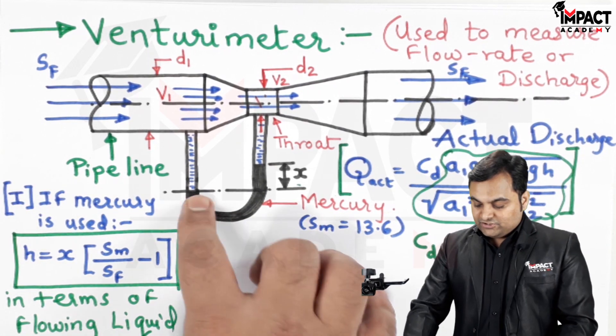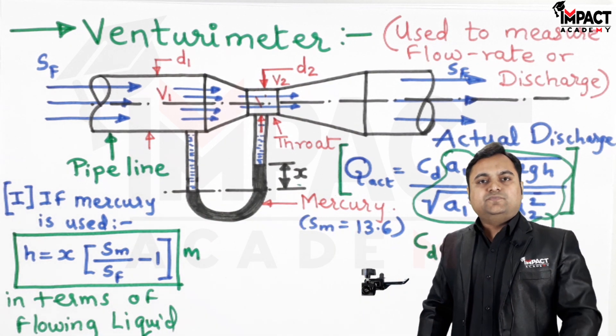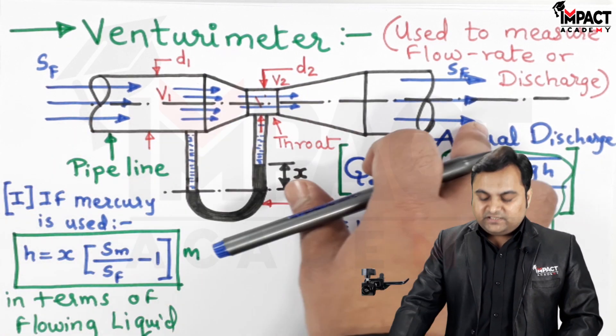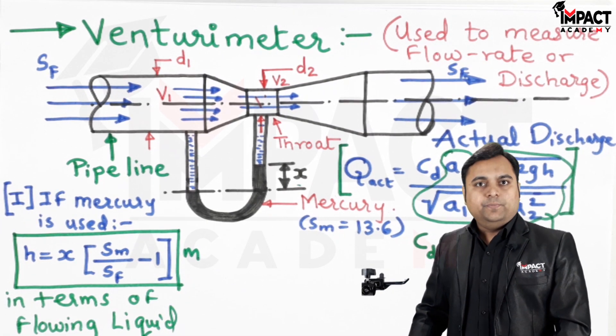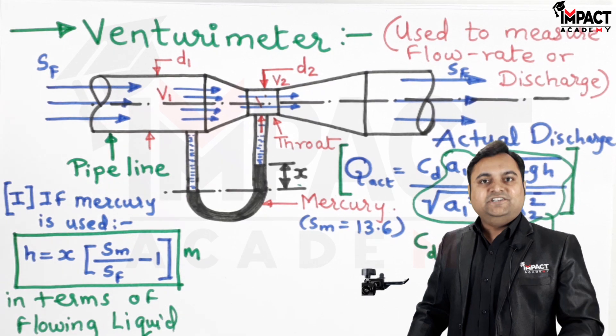If instead of mercury a lighter liquid is used, and that is mostly the case if the pressure inside the pipeline is less, then we have to use an inverted differential U-tube manometer using a lighter liquid.